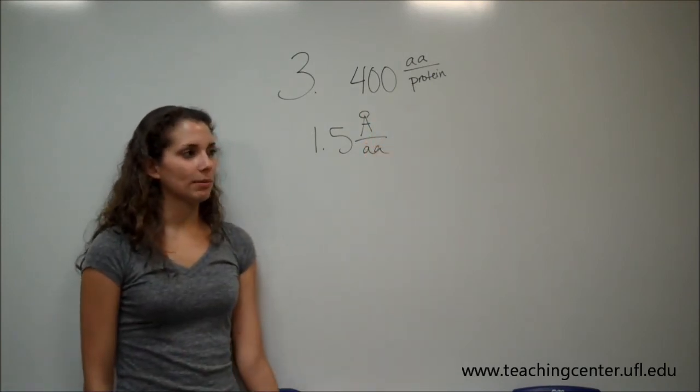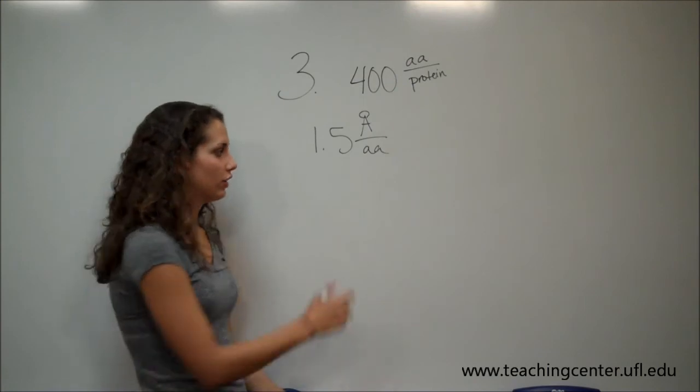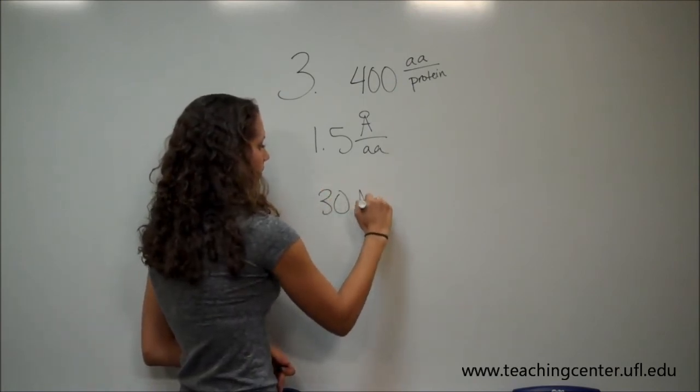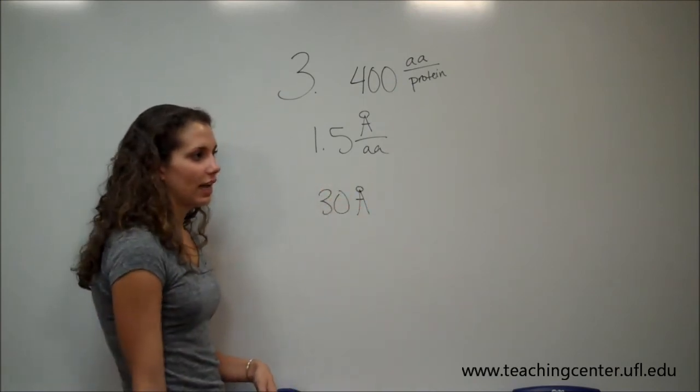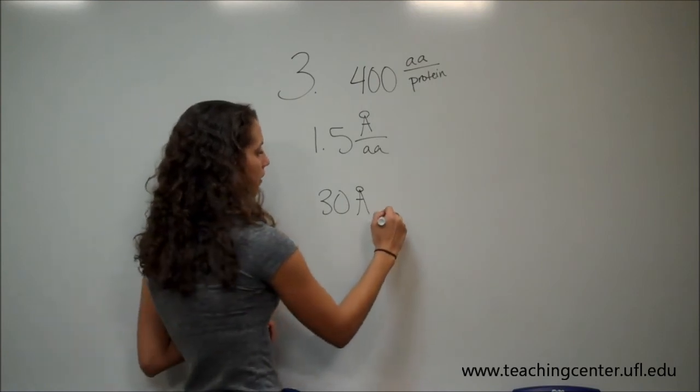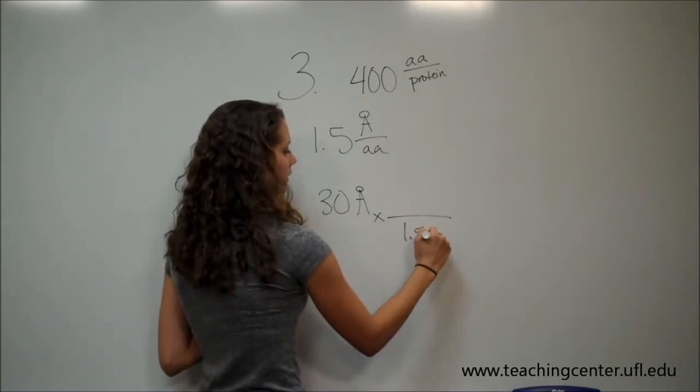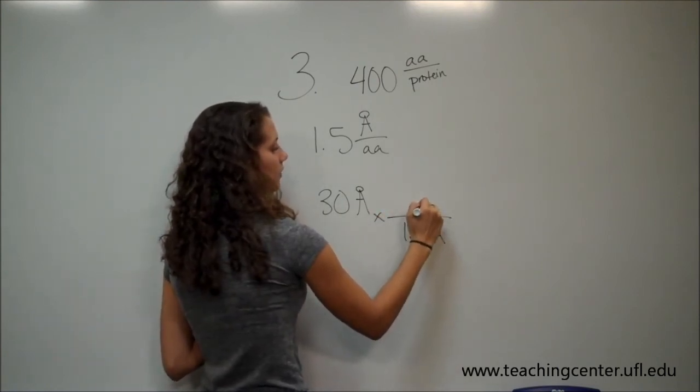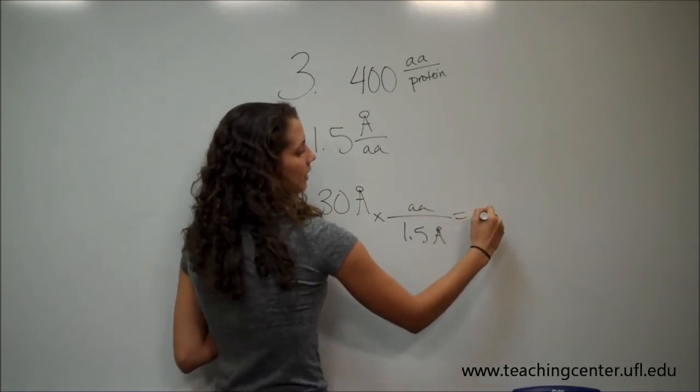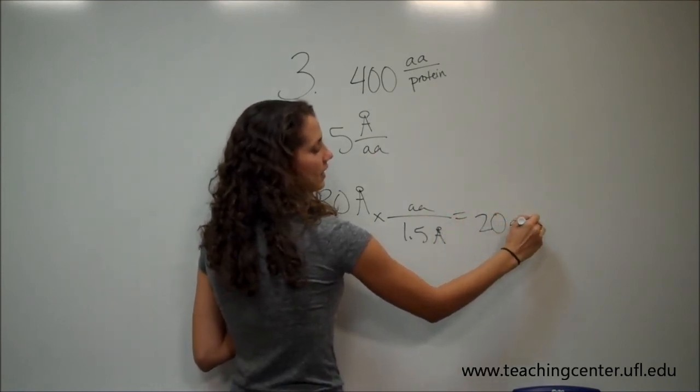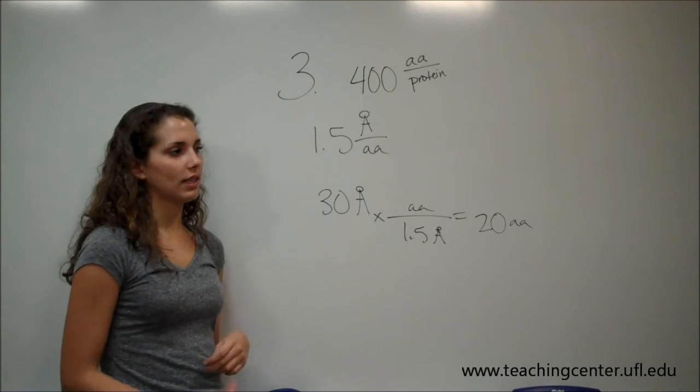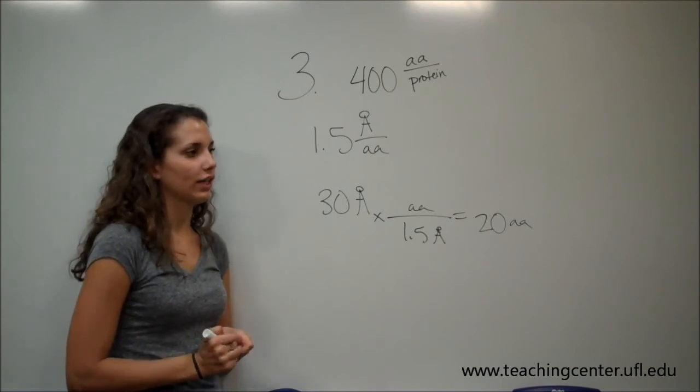And so in order to cross the bilayer with a thickness of 30 angstroms, we're going to use dimensional analysis again, and we can divide 30 by 1.5 so that the units cancel. This tells us that there are 20 amino acids needed to cross a membrane with a thickness of 30 angstroms.